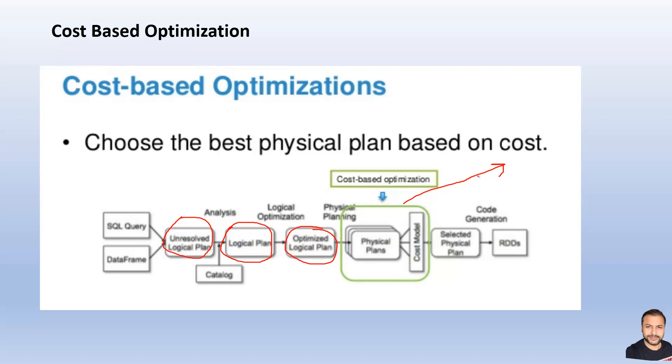For this cost optimizer or cost optimized model to work, it collects a lot of statistical data about the tables involved, the different table partitions involved, the columns involved, and also it calculates a lot of data pointers, the cardinalities, and all those for the table and the table data involved in that particular SQL statement.